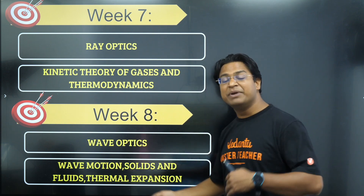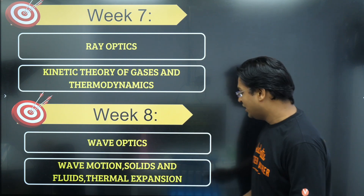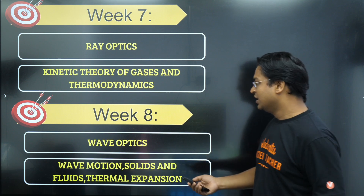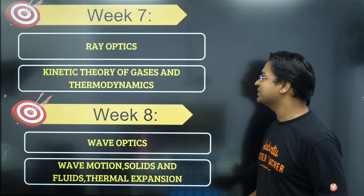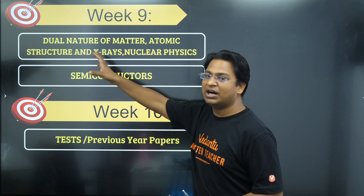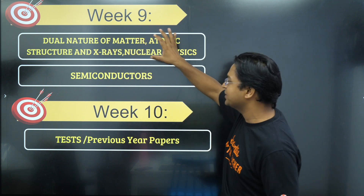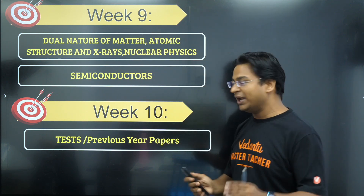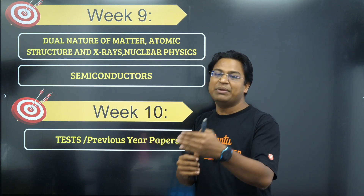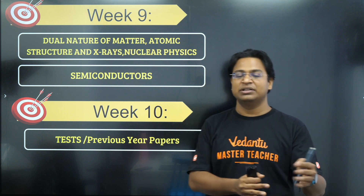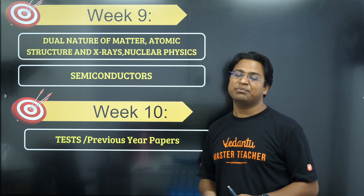In Week 8, cover Wave Optics along with Waves from 11th grade, plus Fluids and Thermal Expansion to ensure everything is covered in 10 weeks. In Week 9, cover Dual Nature of Matter, Atomic Structure, X-rays, Nuclear Physics, and Semiconductors — the end chapters of 12th grade. These are delayed as much as possible so they get covered at your institute before you revise them.